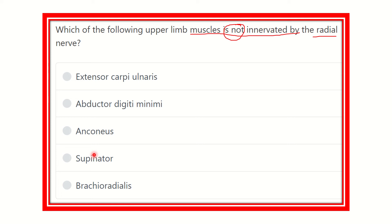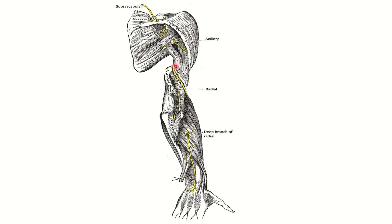First, we need to review the innervation of the radial nerve. The radial nerve arises from the posterior cord of the brachial plexus, leaves the axilla, and in the upper arm it passes between the lateral head and medial head of the triceps muscle, then enters the forearm. The radial nerve lies almost posterior to the upper limb, and supplies the posterior group of muscles of the upper limb.